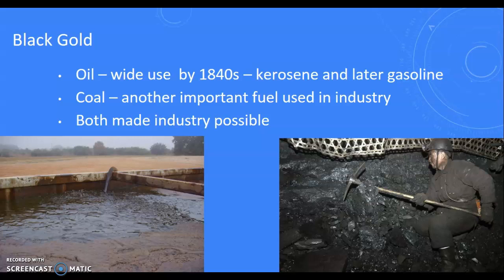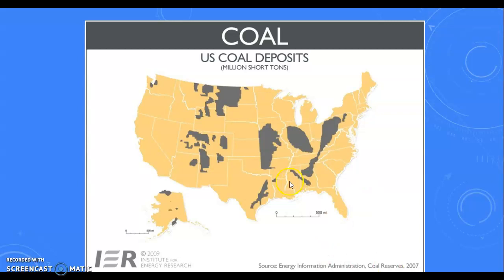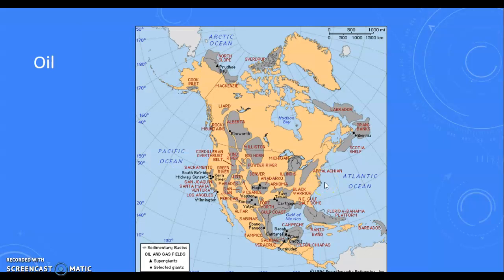Some of the major resources: oil, which is going to have significant use by the 1840s — that being kerosene and later gasoline — very important for fuel. Also coal. Take coal and oil together and this is going to make much more industry. The people mining coal, of course, are not going to have favorable working conditions. You're going to see significant coal deposits in the Black Hills region and the Appalachian region. Oil can be found from present-day Texas into western Pennsylvania, and even in the west and the Dakotas.